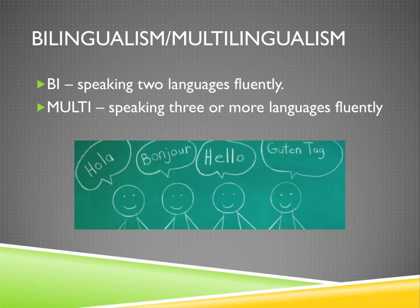A lot of these theories are based on bilingualism because access to multilingual folks is not the easiest in the United States, and it's difficult to control in countries like Europe where they might speak three different languages. If you were trying to find only people that spoke English, German, and French, you would have a hard time. So most of these theories are based on bilingualism, although with culture and society we are getting more research on multilingual folks.